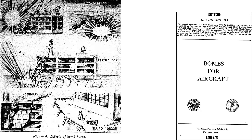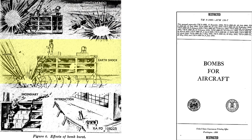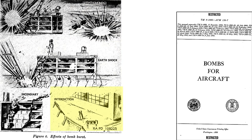This chart from a declassified 1950 United States Air Force document titled Bombs for Aircraft shows the categories of damage or impacts bombs can have. This includes blast or air shock peak pressure, fragmentation, ground earth shock, incendiary, and interdiction.